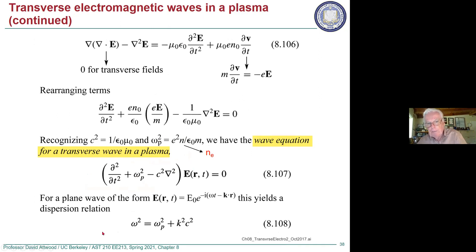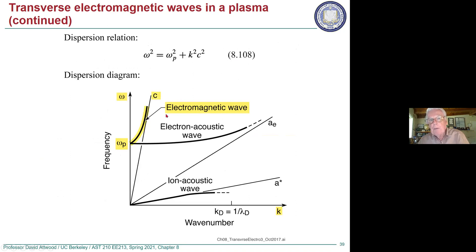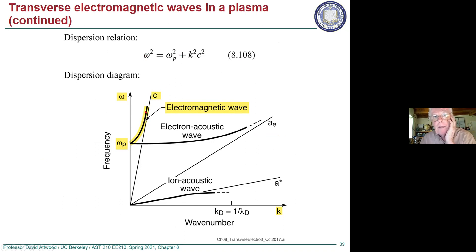From this, you get a dispersion relationship. You assume a wave of this form and get a relationship between omega and k, where k is 2π over lambda. You also get a refractive index by writing omega over k. At high enough frequency where omega squared is much bigger than omega_p squared, omega_p doesn't matter much, and you get omega equals kc — it's like propagating in vacuum if you're well above the plasma frequency.